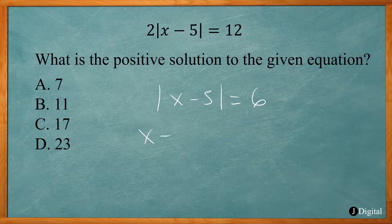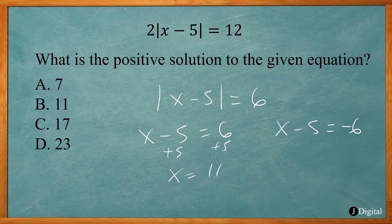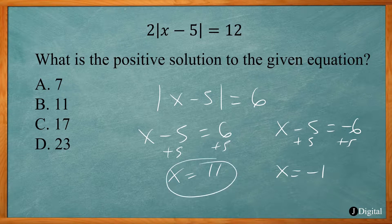Again, set your two equations where it equals positive 6 and another equation where it equals negative 6. Add 5 to both sides. That's our positive result, so we can stop there. But I'll show the other one: add 5 to both sides, x equals negative 1. In this case, our positive answer is x equals 11, so answer choice B.